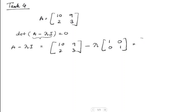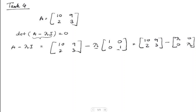If you solve that further, you have A which is [10, 9; 2, 3] minus — if you multiply lambda inside the identity matrix, you get lambda times 1 is lambda, lambda times 0 is 0, lambda times 0 is 0, and lambda times 1 is lambda. So if you subtract both of them you get: 10 minus lambda, 9 minus 0 is 9, 2 minus 0 is 2, and 3 minus lambda.